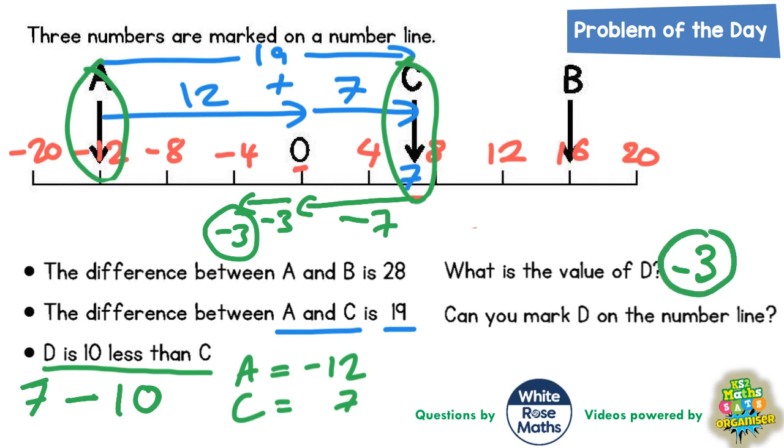Now it does say, can we mark D on the scale? Well, if zero is here and minus four is here, minus two would be in between. And then minus three would be in between the minus two and the minus four, which I'm marking with a big pink arrow here. So D would go there on the number line.